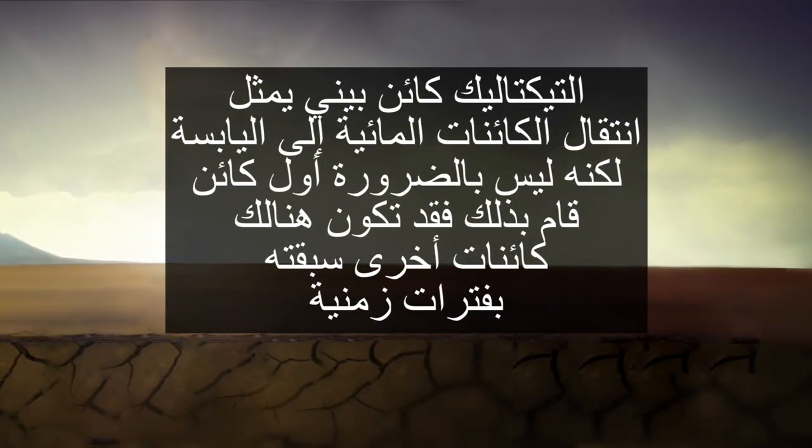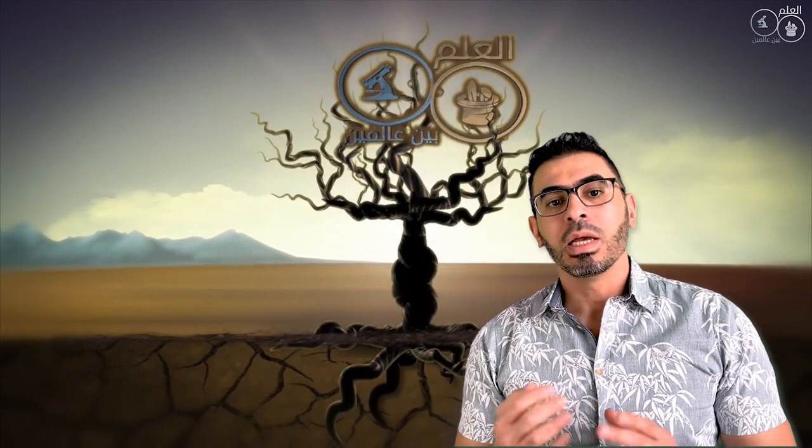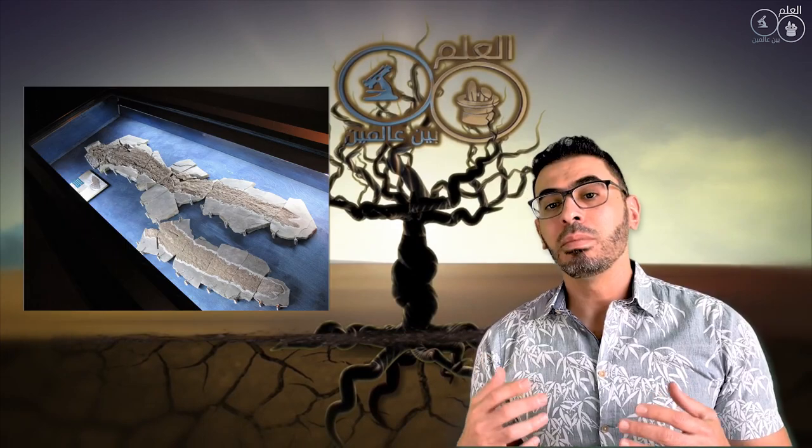وملخص القول أن التكتاليك كائن بيني يمثل انتقال الكائنات المائية إلى اليابسة، لكنه ليس بالضرورة أول كائن قام بذلك. ونلاحظ هنا أننا نتحدث عن أمور حصلت قبل مئات ملايين السنين، فلا أحد ينتظر أن نوثقها بشكل دقيق كما لو أنها تجري اليوم. بالمناسبة، هناك اليوم حوالي 6 مليون نوع لم نقم بتصنيفها، والأبحاث تبقى جارية لمحاولة الوصول إلى أدق المعلومات، ومثلاً قُبيل هذا الفيديو نُشر بحث في مجلة نيتشر يتحدث عن سمكة تسد فجوة مهمة في السجل الأحفوري لتطور رباعيات الأرجل من الأسماك القديمة.